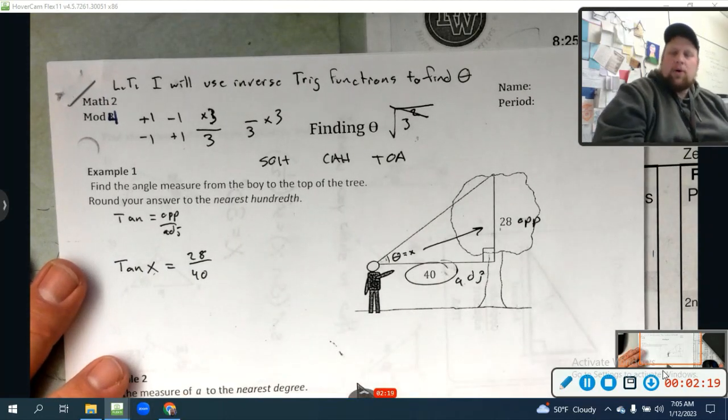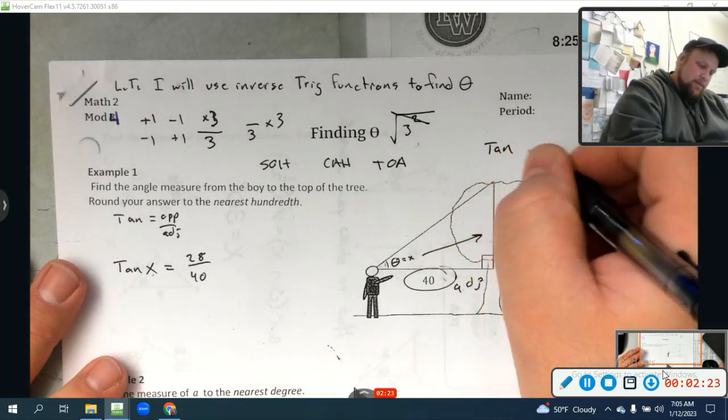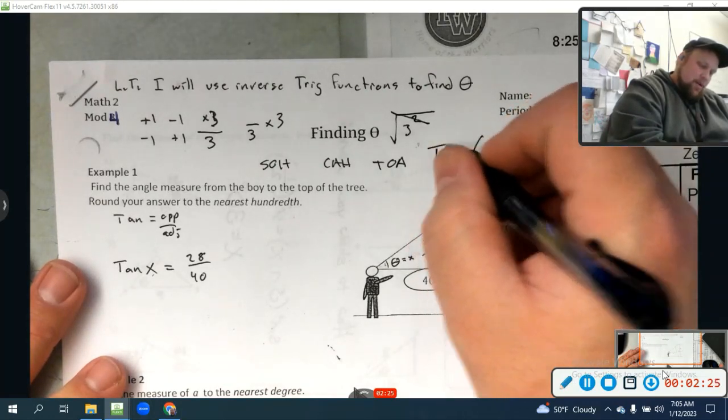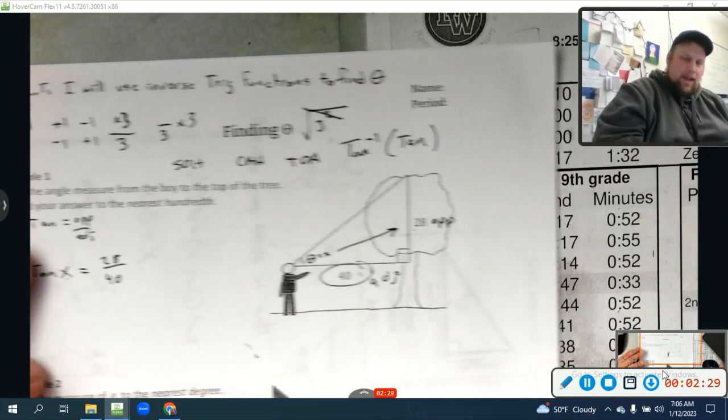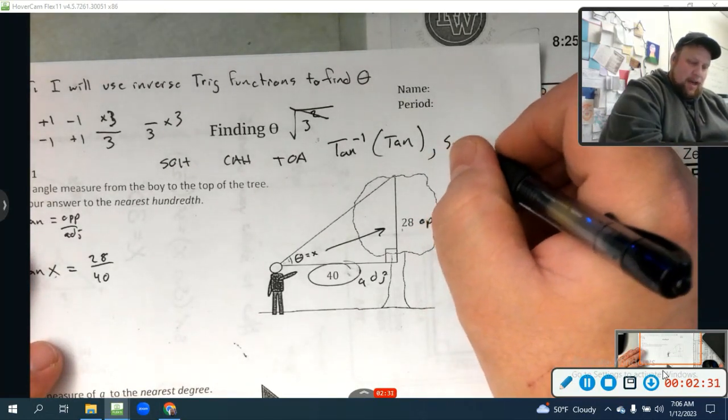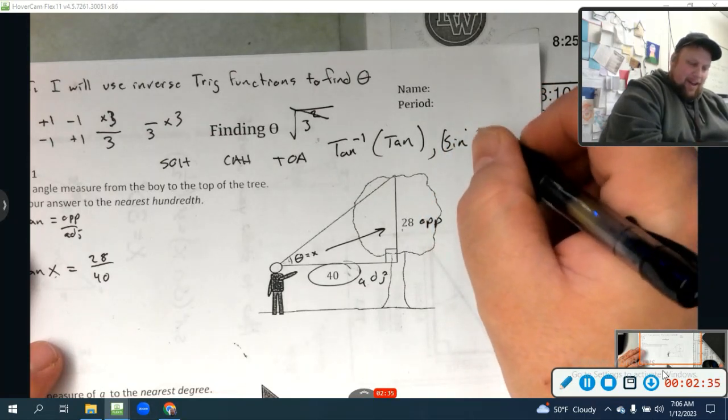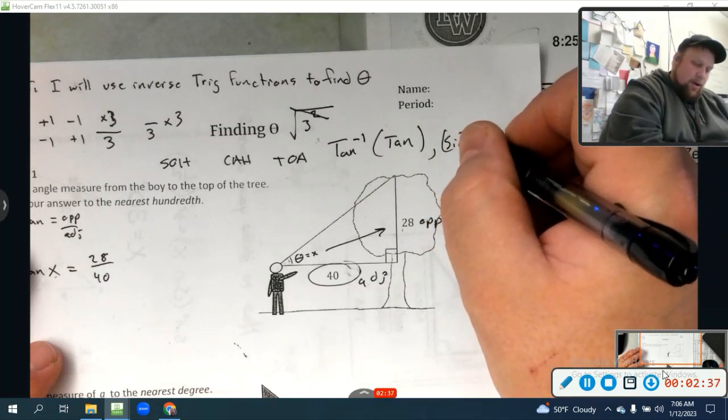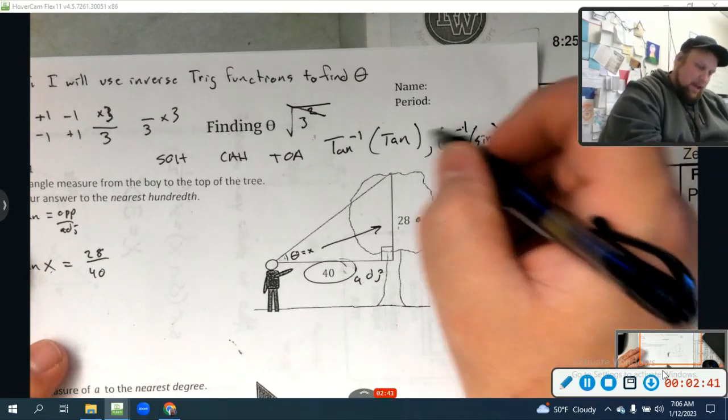Do you want to know how we undo a tangent? To undo a tangent, we take what's called the arc tangent, or the inverse tangent. To undo a sine, actually I should have wrote a sine over here, we do an arc sine, or what we call an inverse sine. They cancel each other out.